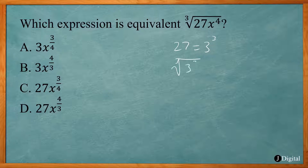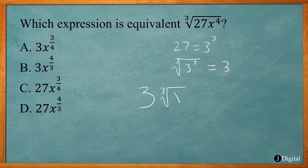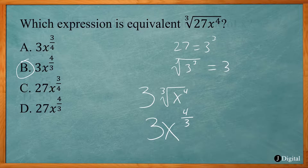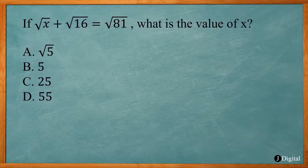Anything squared comes outside the radical as a single one of those. So 4 comes out and the x comes out. There's nothing left underneath the radical, so the answer is just 4x. So answer A.